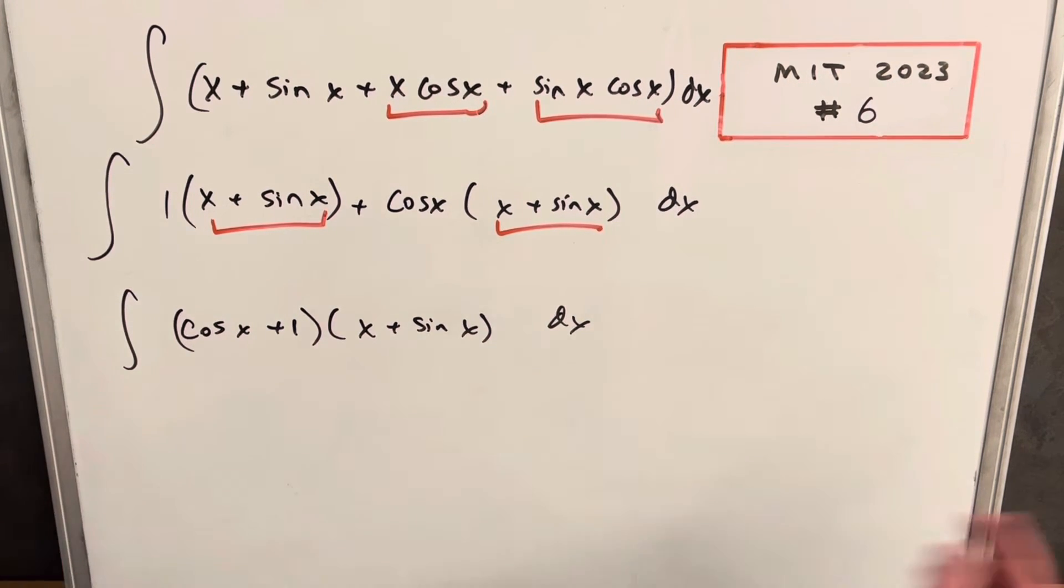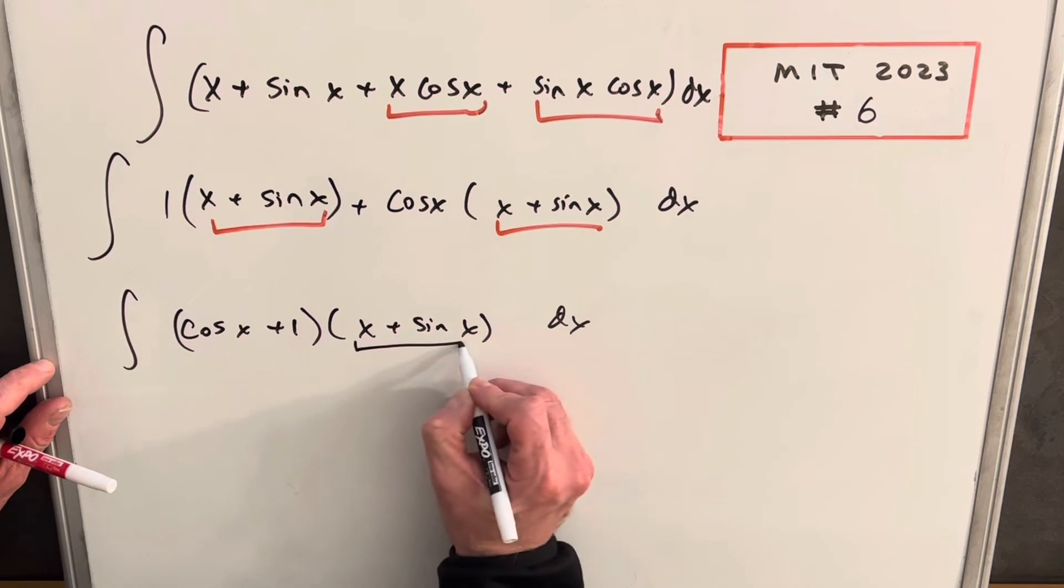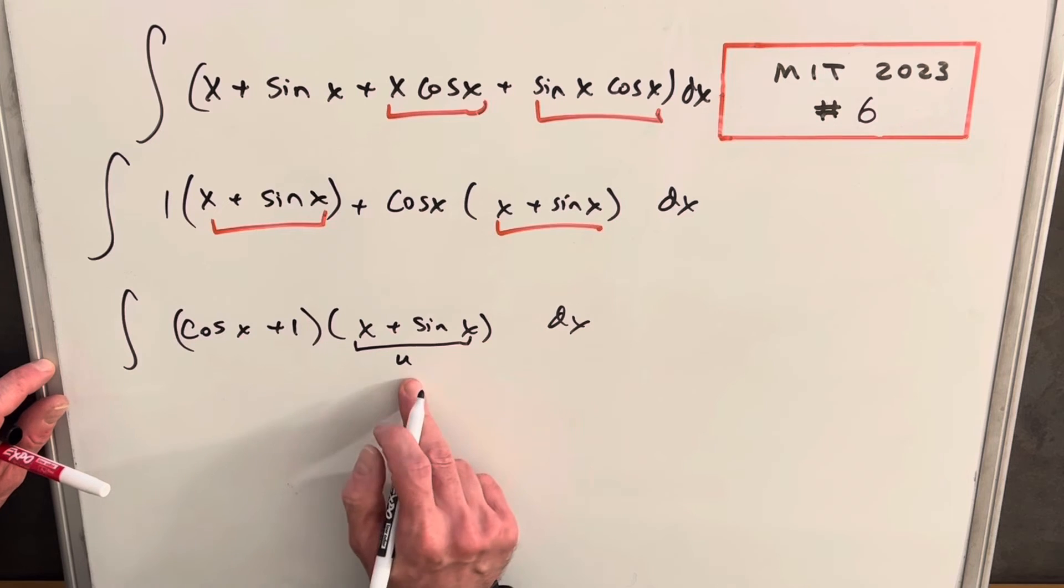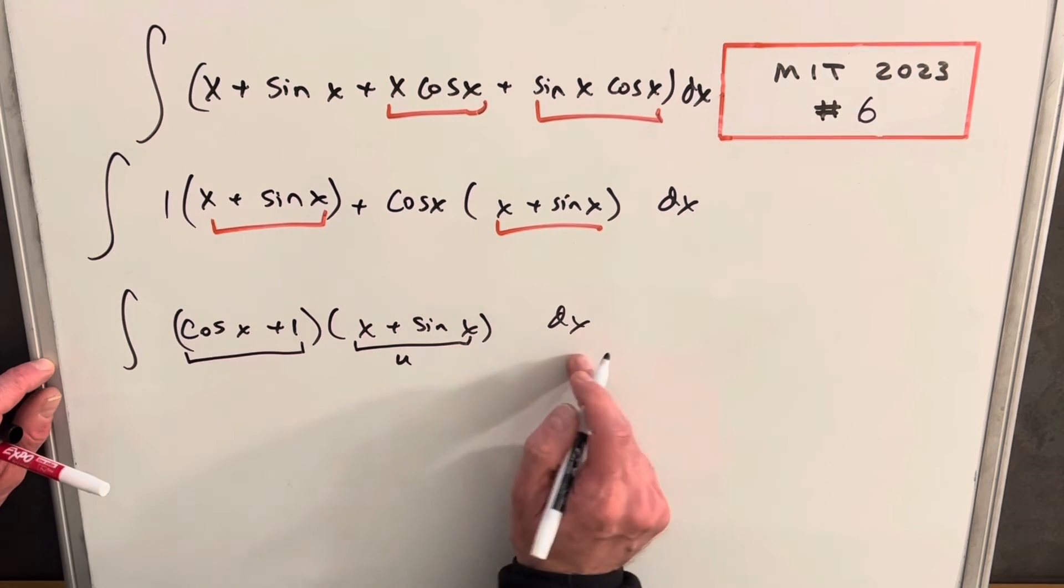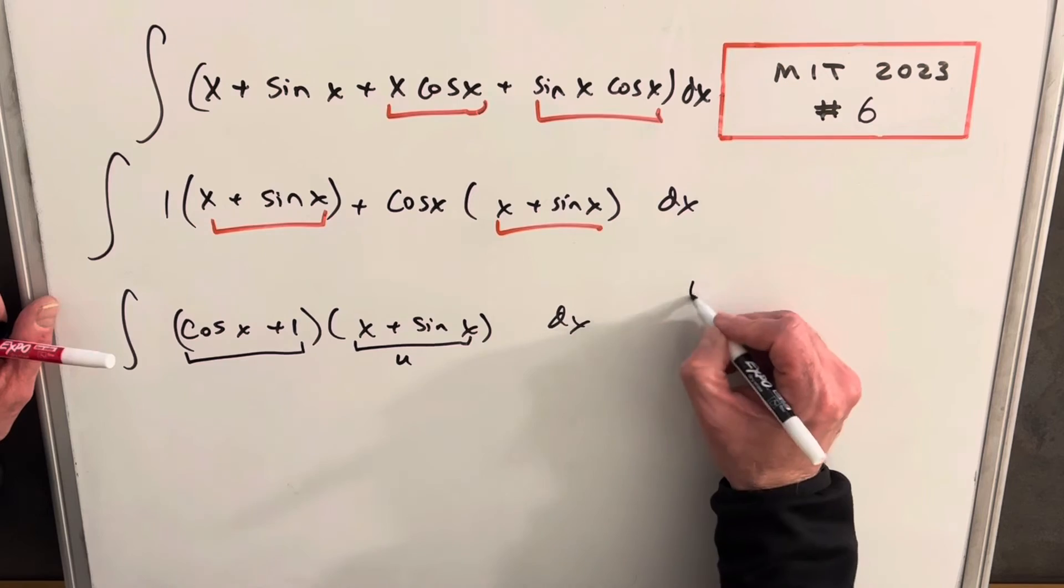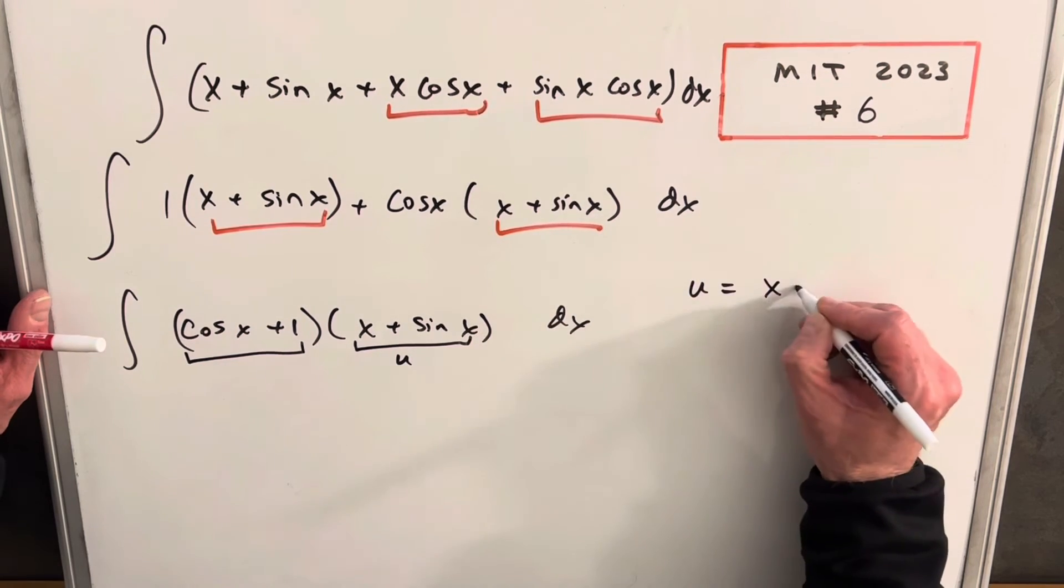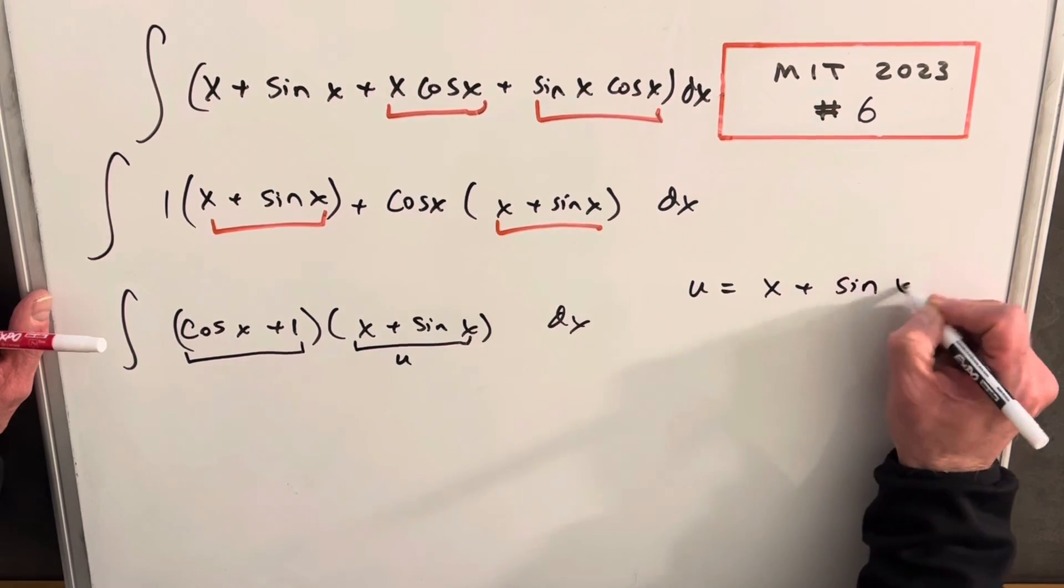But then it was clear that actually we could do a u-substitution here, because if we do this and make this our u, the derivative of this is actually this piece right here with our dx. So let's just see how that's going to work.